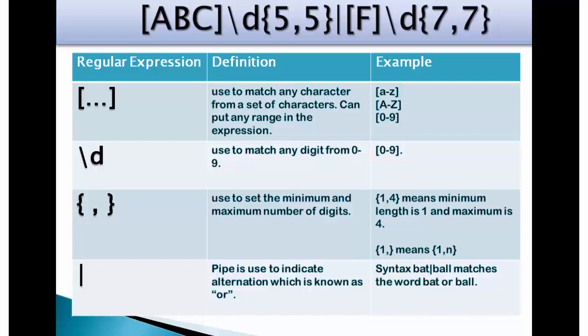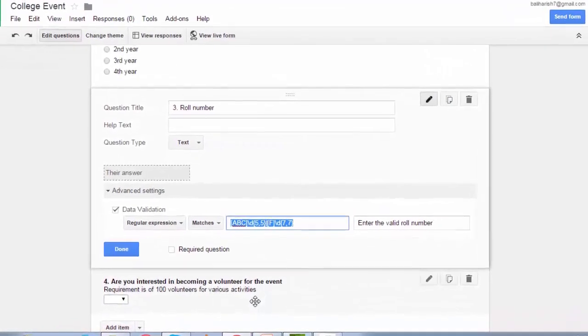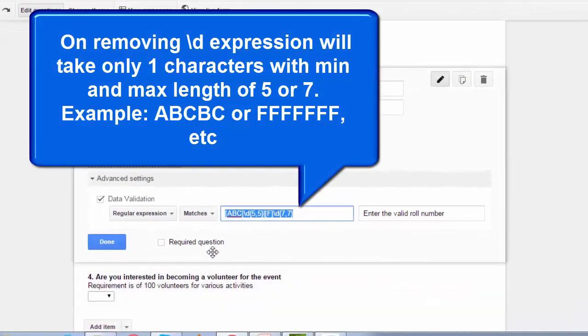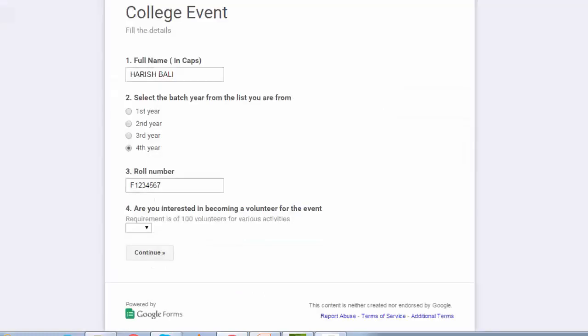Let me now go back to the form. If I remove this backslash D from the syntax, then it will not take the number of digits but will take characters from A, B, C with minimum and maximum length of 5 or only F from a length of 7 like A, B, C, B, C or maybe 7 times F etc. So I need to put backslash D in this syntax to determine that the minimum and maximum length is for digits.